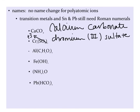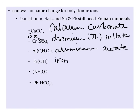In the next example, we have aluminum. Aluminum does not need a Roman numeral, because it always has a plus three charge. Inside our parentheses, we'll have a polyatomic ion, and if you look that one up, it's called acetate. In the next example, we have iron. Iron is a transition metal with more than one possible charge, so it is going to need a Roman numeral. And that's going to be a two. And then in the parentheses, we have the polyatomic ion hydroxide.